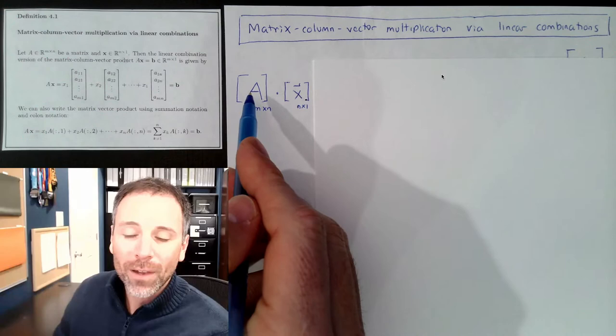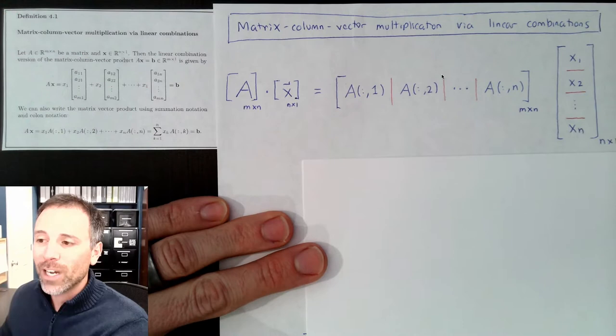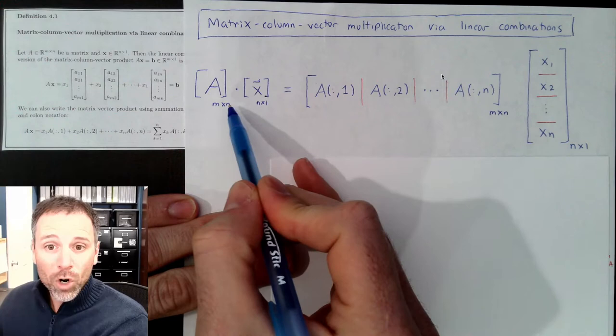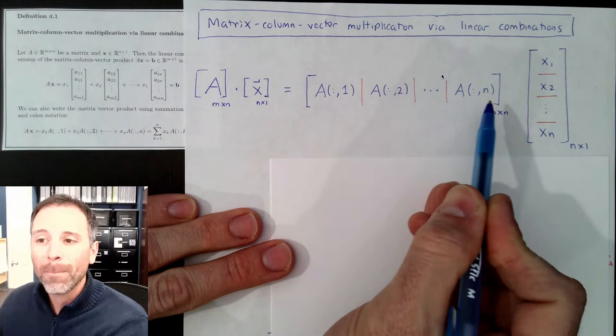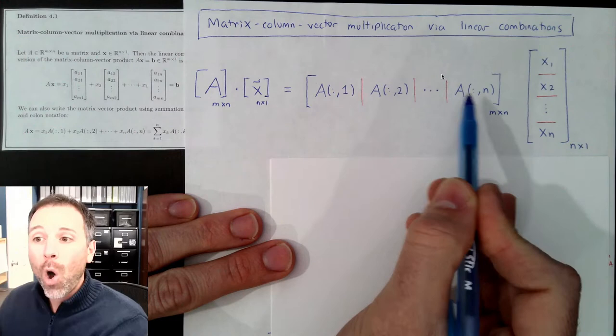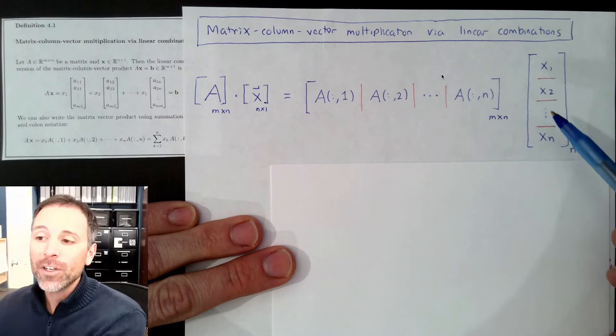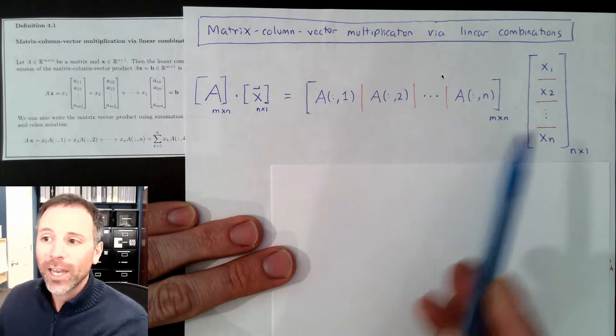So what is A times x? The modeling matrix is on the left, the algebraic worker is on the right, so we cut A into columns — this is what we call a column partition. A has m rows and n columns, so we cut it into n columns: the first column, the second column, all the way to the nth column. Then we cut x into its n individual scalar entries.